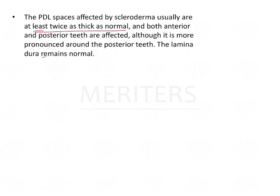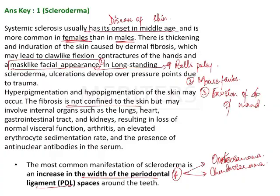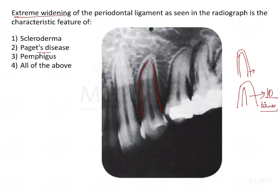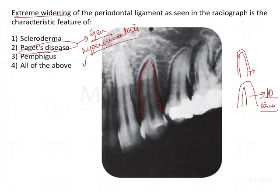Both anterior and posterior teeth are affected, and the lamina dura remains normal. In contrast, in Paget's disease of bone, there is generalized hypercementosis, and because of this, there is actually a decrease in the PDL space.